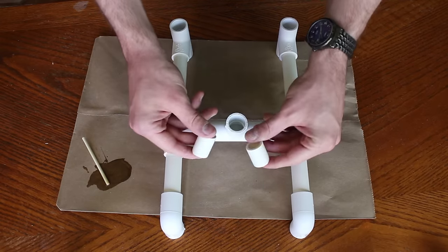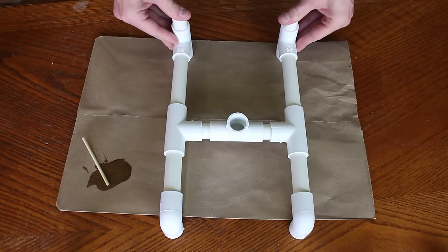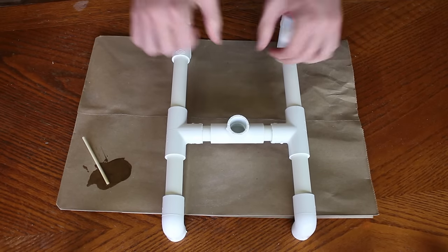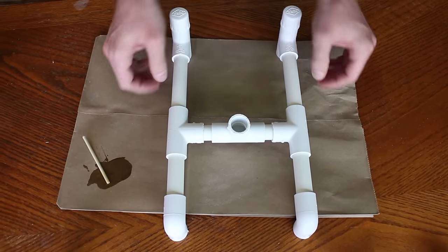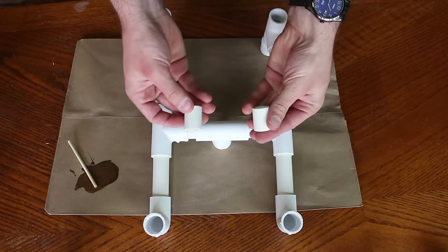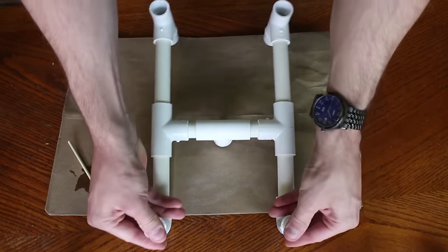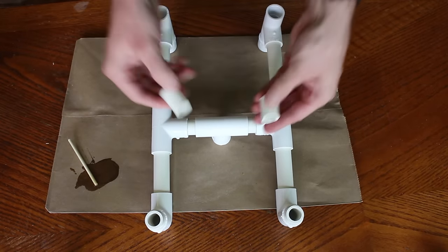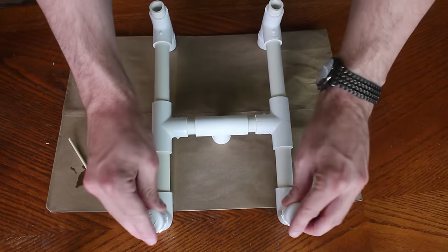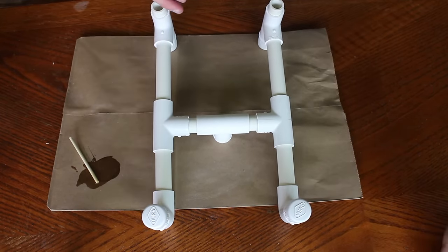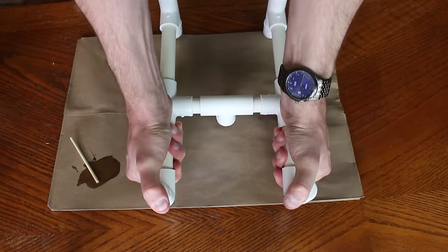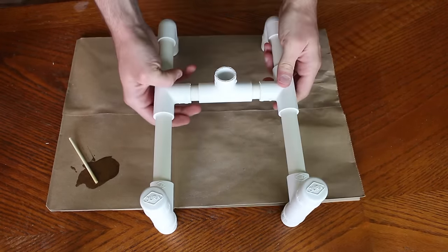Then we'll take some small 1 inch pieces and press them into the top of the tees. Now we'll flip the whole thing over and place a couple more 1 inch pieces into the elbows. Then we'll do the same with the other side. And then we'll just cap off all 4 pieces. Now let's set this aside.